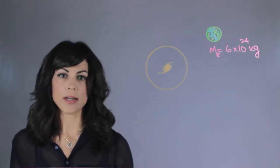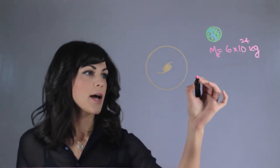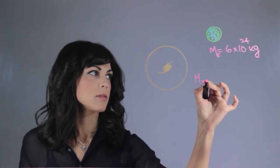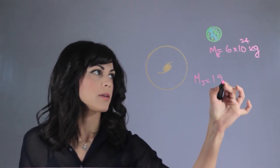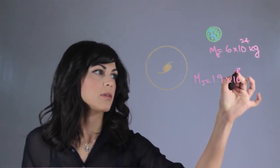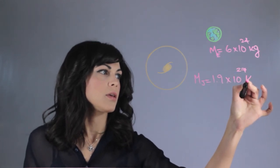Now Jupiter, which is the largest planet in the solar system, has a mass of 1.9 times 10 to the 27th kilograms.